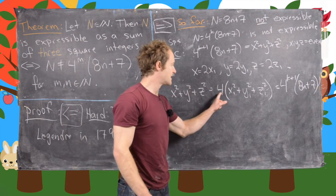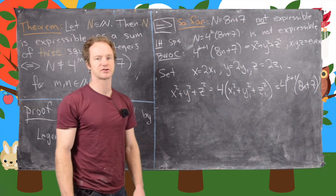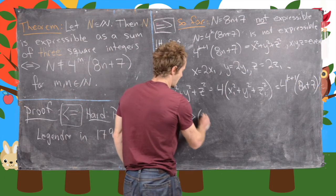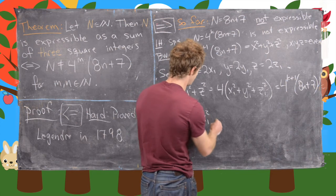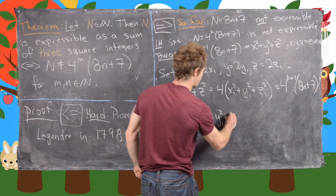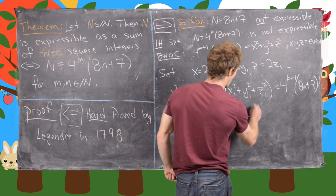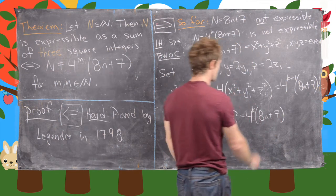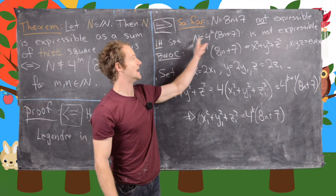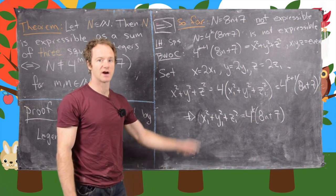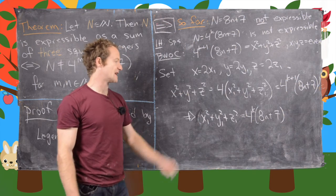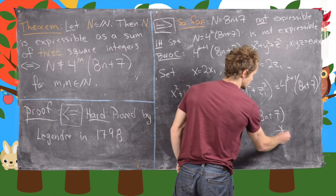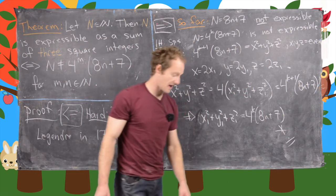This is an expression of 4^k(8n + 7) as a sum of 3 squares, but our induction hypothesis assumed that 4^k(8n + 7) was not expressible as a sum of 3 squares. So that leads us to a contradiction and finishes the proof.